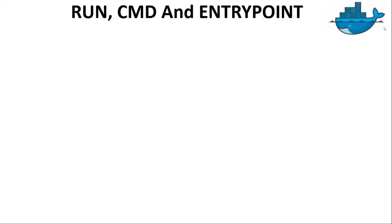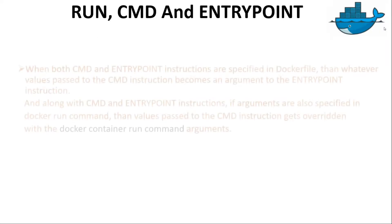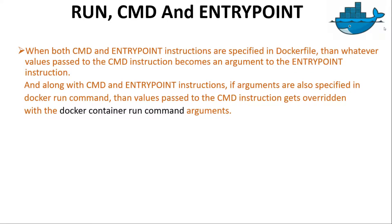Coming to the first point: when both CMD and ENTRYPOINT instructions are specified in a Dockerfile, then whatever values are passed to the CMD instruction become arguments to the ENTRYPOINT instruction. And if arguments are also specified in the docker run command, then the values passed to the CMD instruction get overridden with the docker run command arguments.